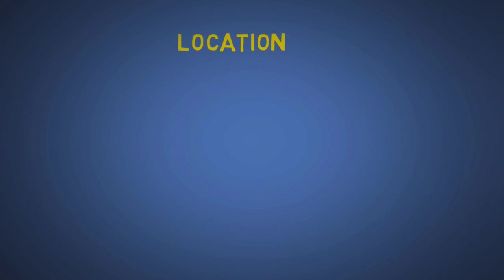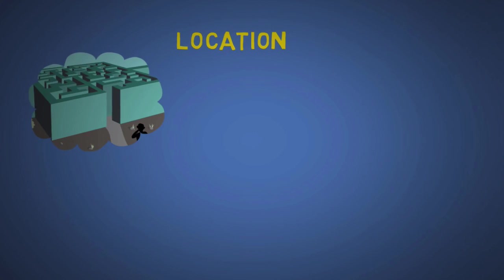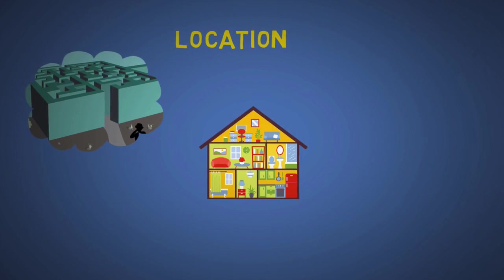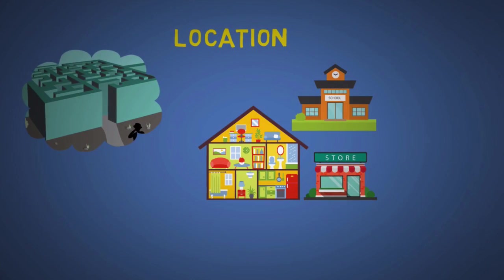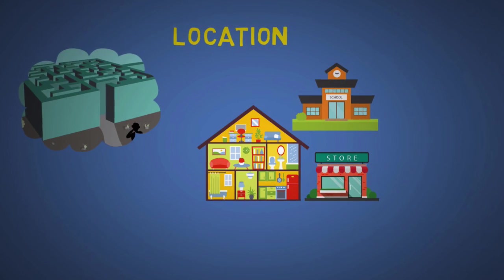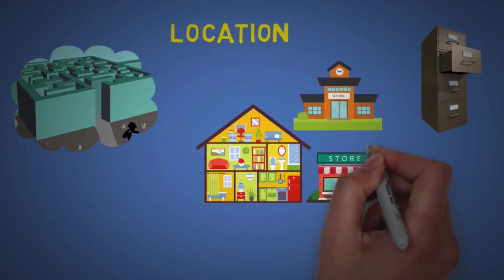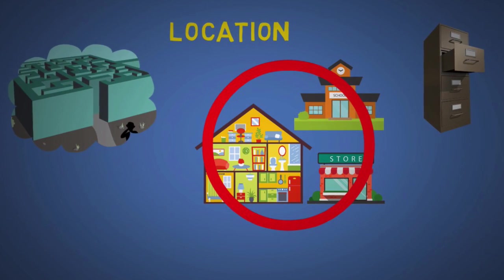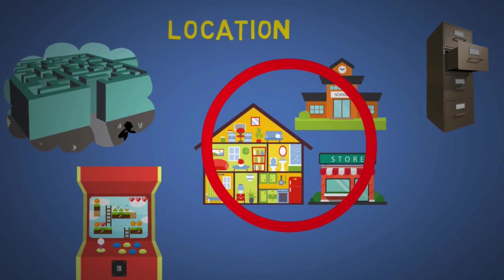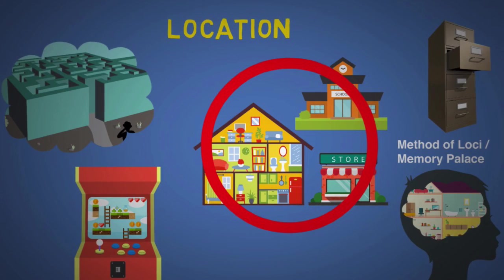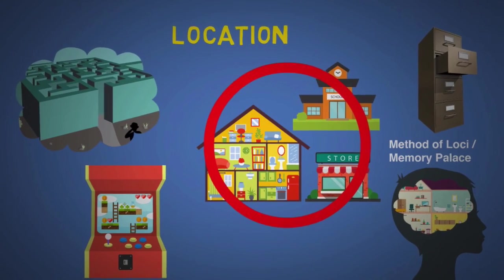L is for location. Our spatial memories are naturally incredible. Think of all the rooms and places you visited in your life and how much you can remember about them. Because one of the greatest secrets to memory is to organize and store things we want to remember in familiar places. You can even store things in video games or places you made up. This is called the Method of Loki, or memory palace.